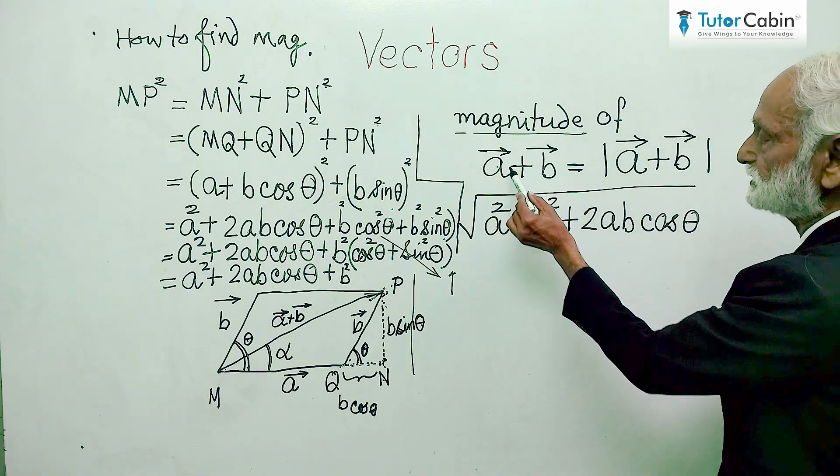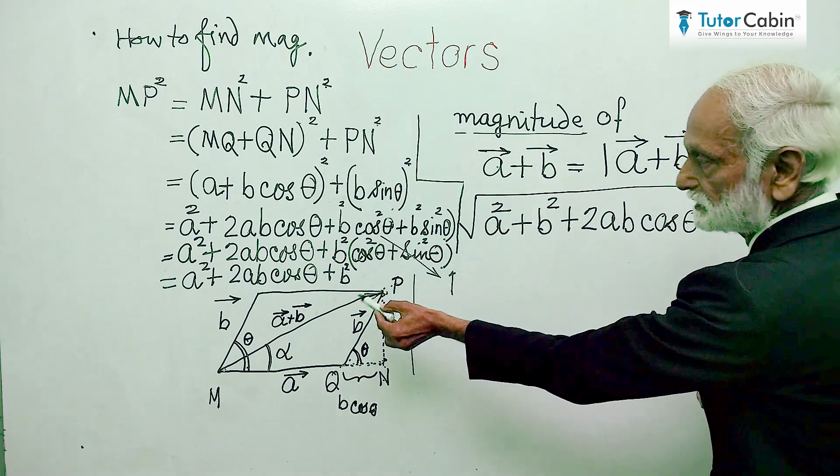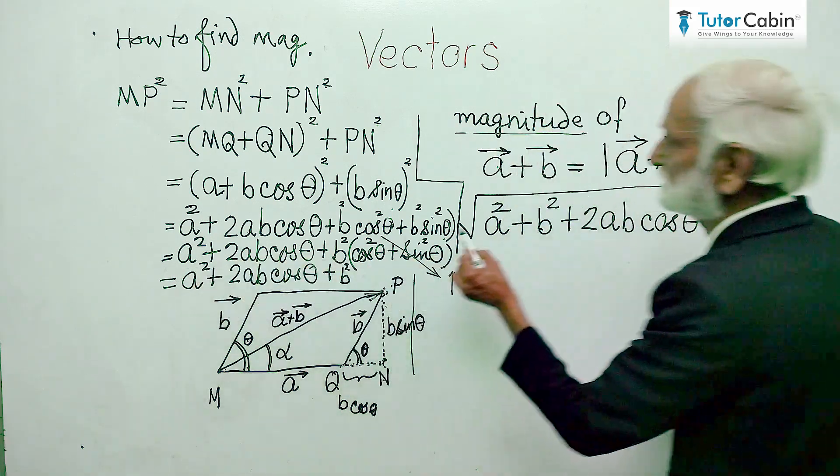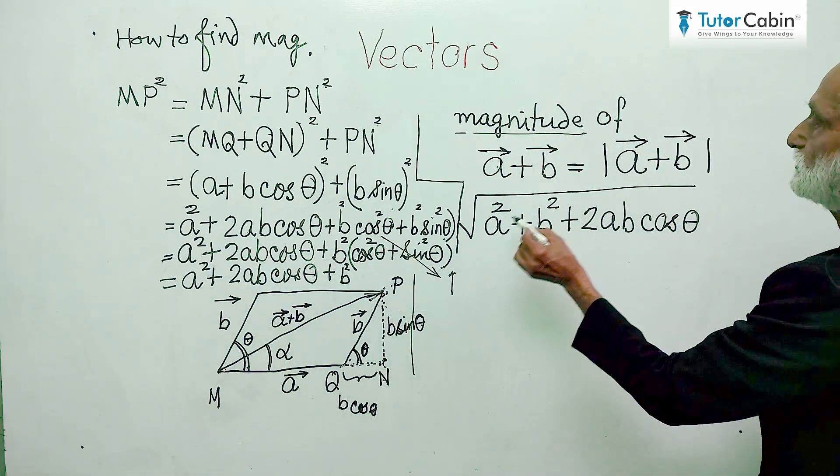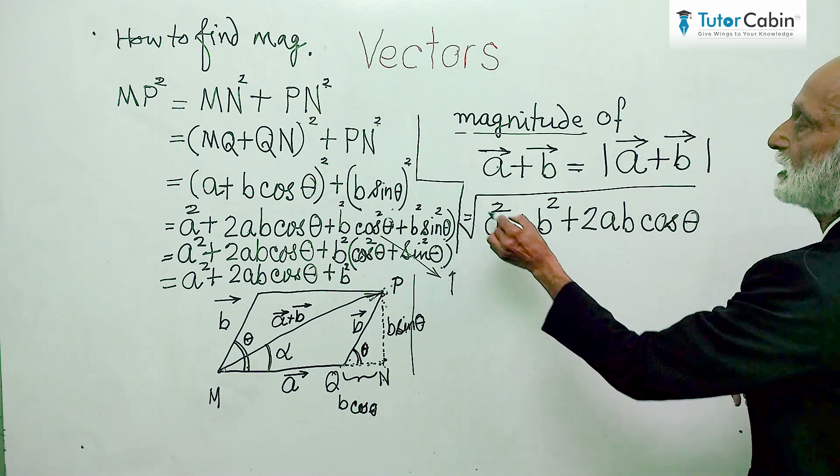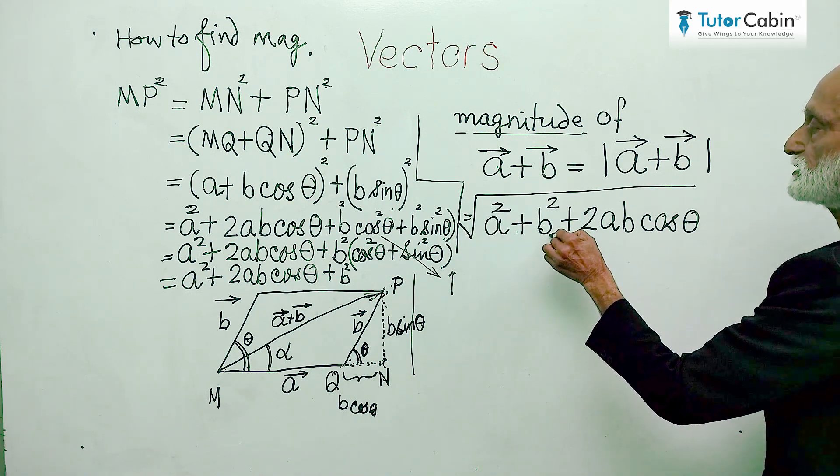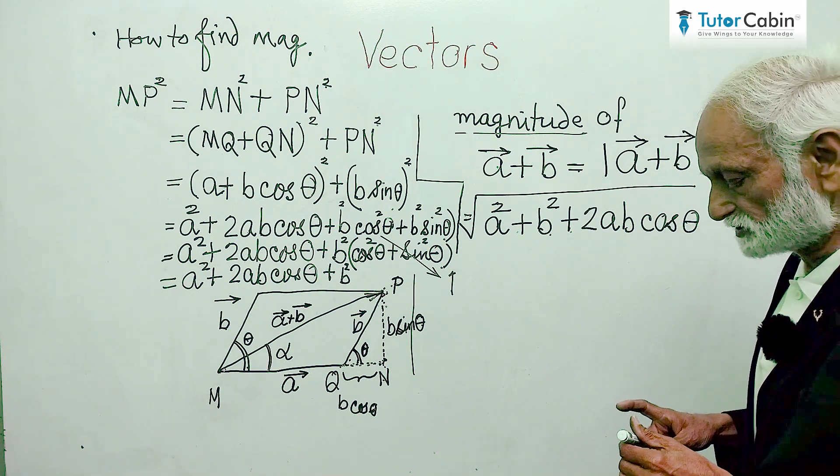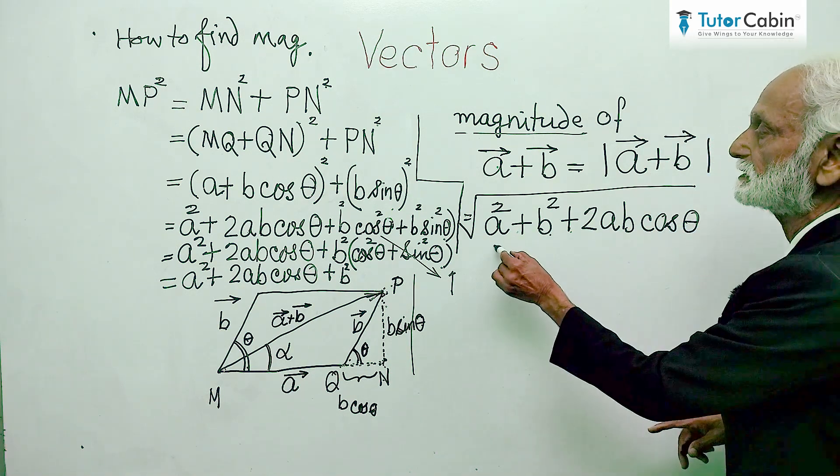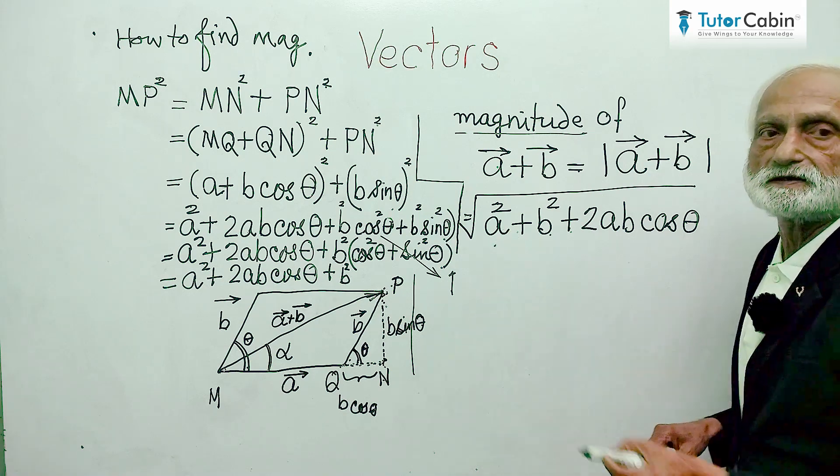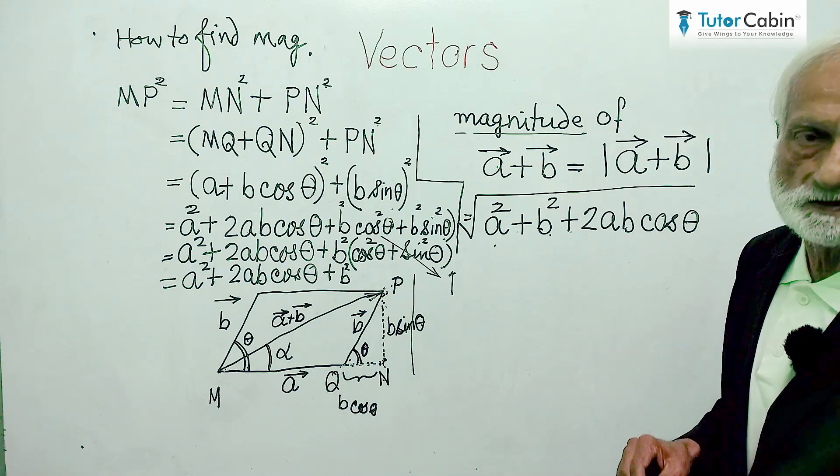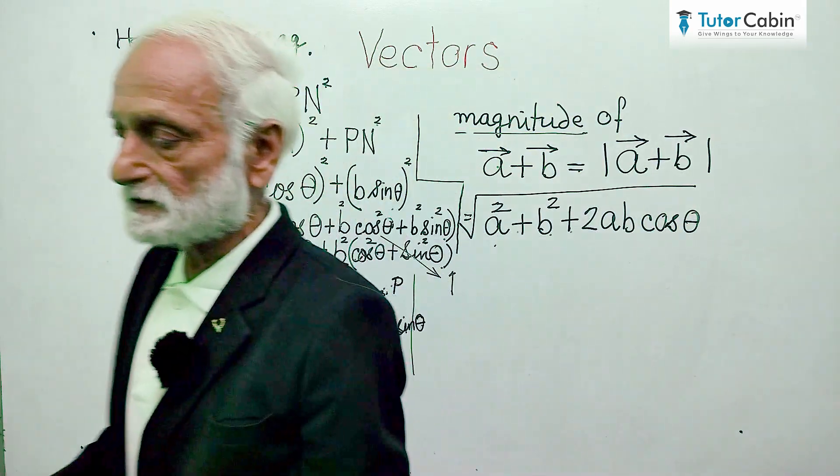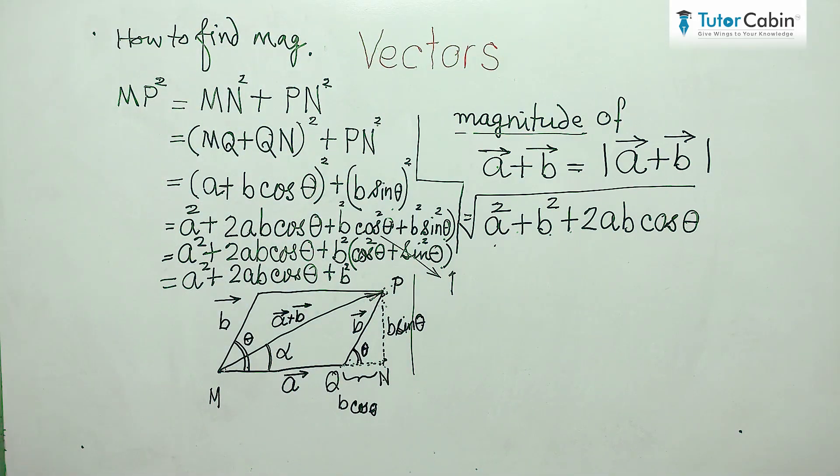So, magnitude of this. As we took under root of this, we get under root a square plus b square plus 2ab cos theta. So, this is how we derive the formula for magnitude of this vector, where the summation of the vectors.